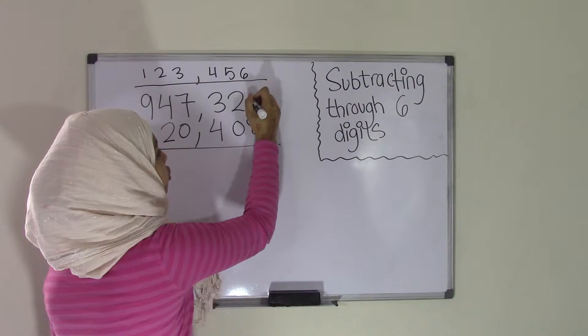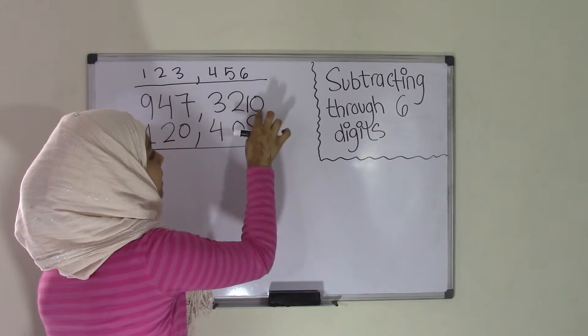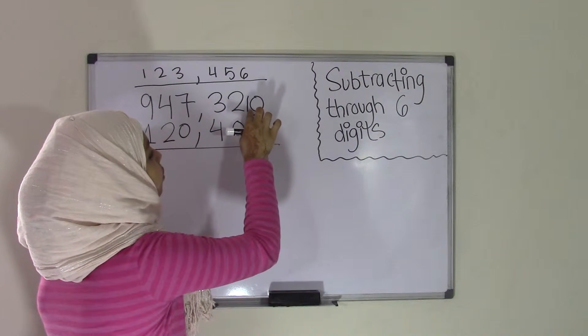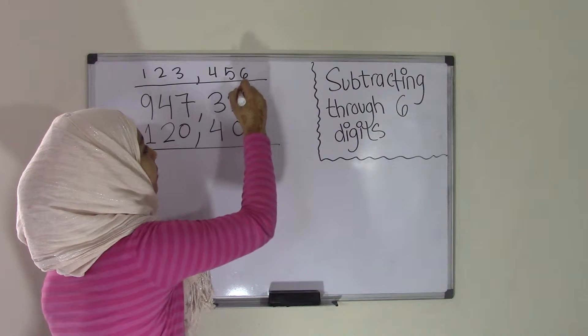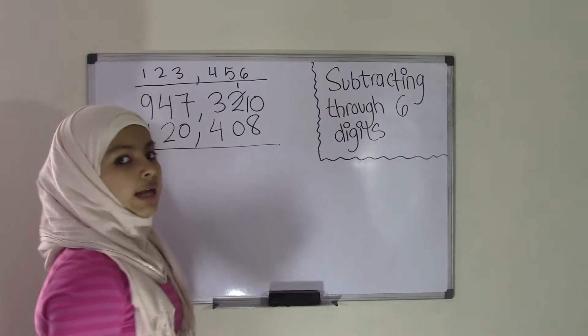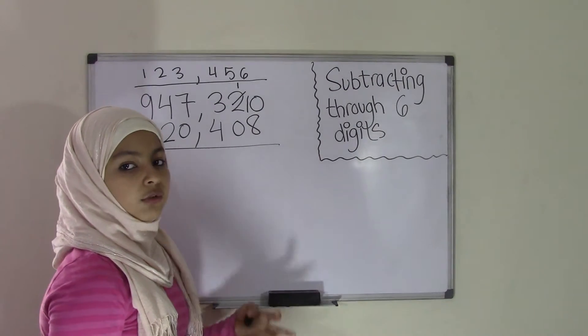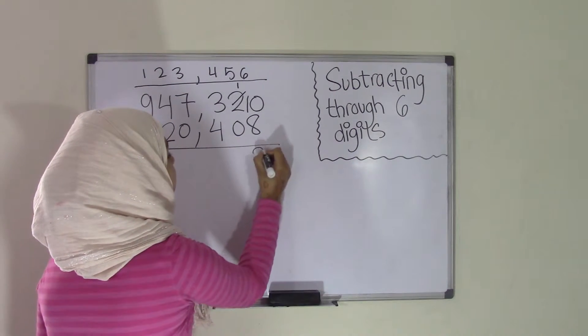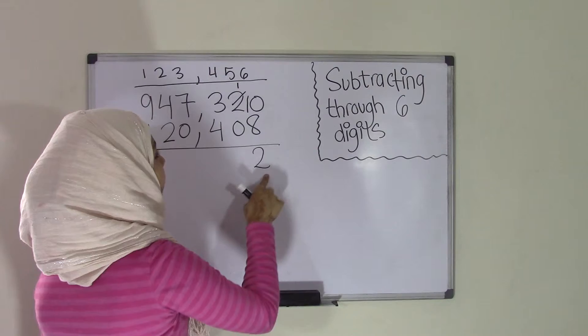So what we have to do is borrow 1 from the 2. So if we borrow 1 from the 2, now this becomes a 10. And since we borrowed 1 from 2, the 2 now becomes a 1. So now we have 10 minus 8. Now we know that 8 subtracted from 10 equals 2. So we're going to bring down the 2 right underneath.